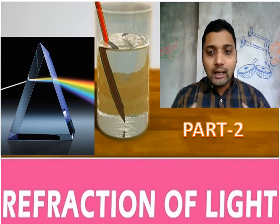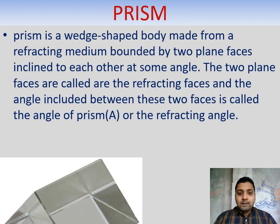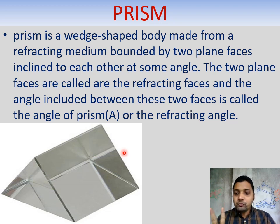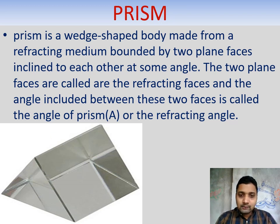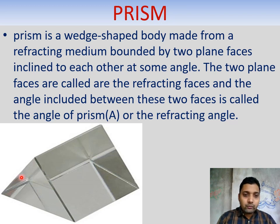Let's start today's topic: refraction of light with the prism. First thing to know — what is a prism? A prism is a three-dimensional object surrounded by five surfaces. One surface is triangular, and the back part is also triangular, meaning two faces are triangular. The remaining three are rectangular. The angle formed between these two triangular faces is called the angle of the prism.